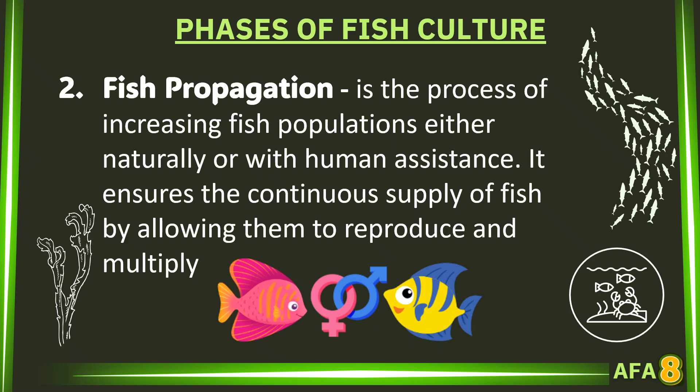The second phase of fish culture is fish propagation — the process of increasing fish populations either naturally or with human assistance. It ensures the continuous supply of fish by allowing them to reproduce and multiply.